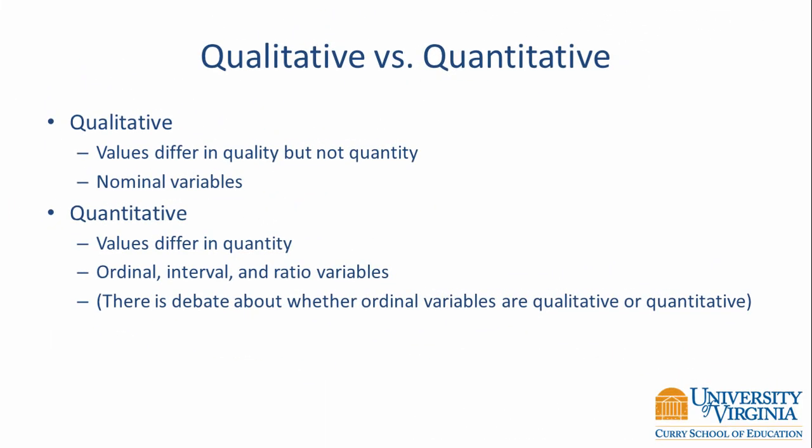Another distinction between types of data is the qualitative versus quantitative distinction. Qualitative data have values that differ in quality but not quantity — these are also called nominal variables. Quantitative variables, on the other hand, differ in quality and quantity. Ordinal, interval, and ratio variables are all quantitative variables.